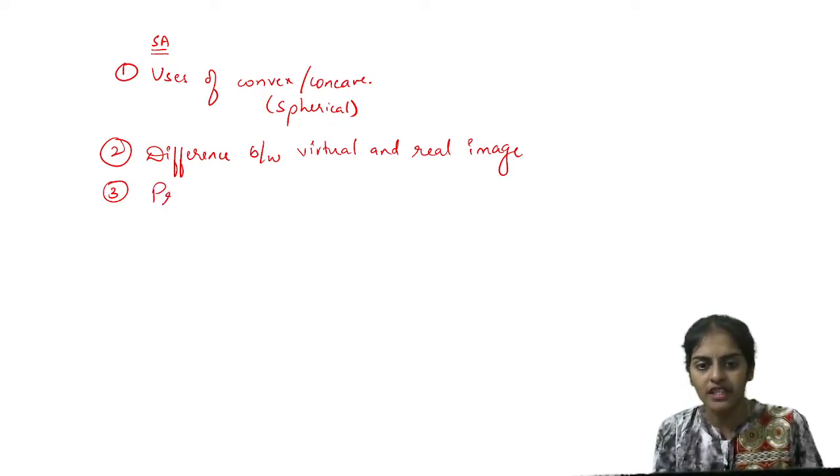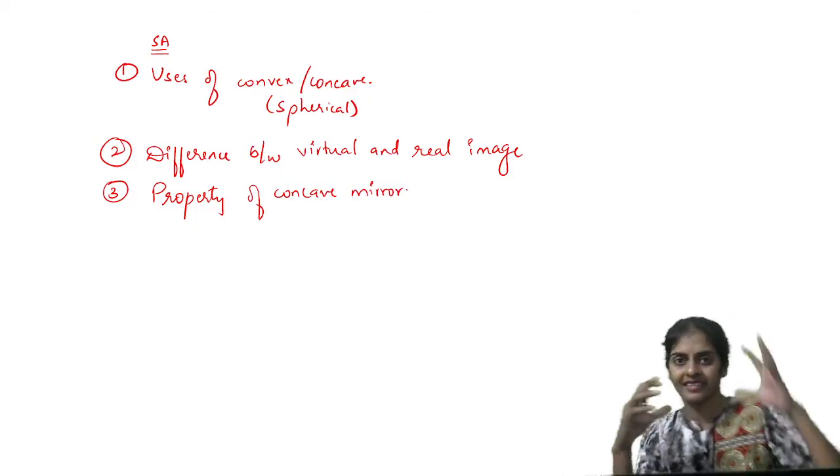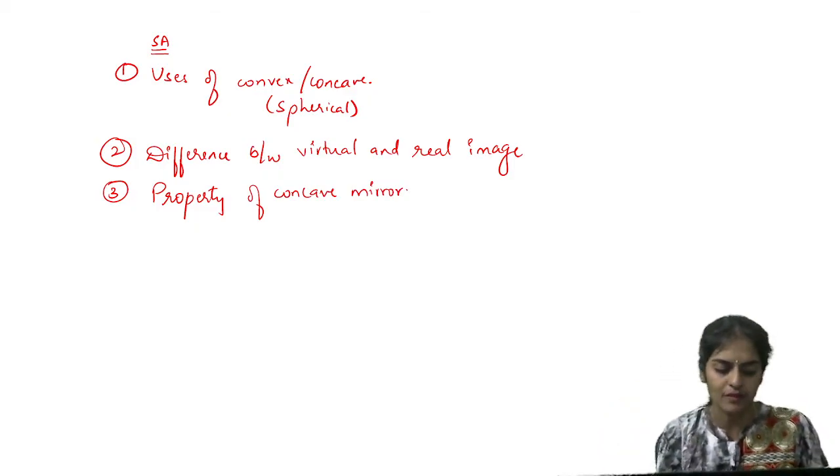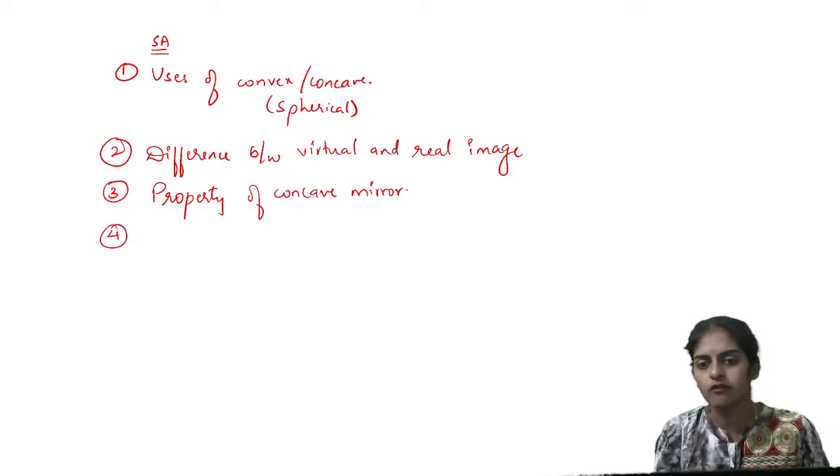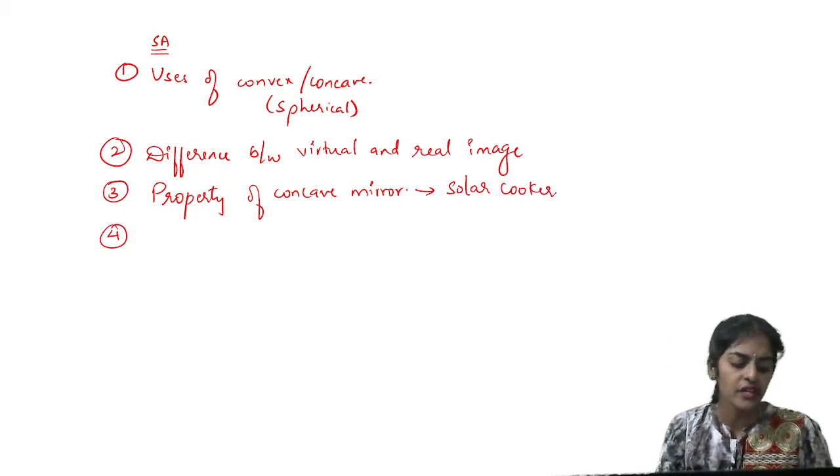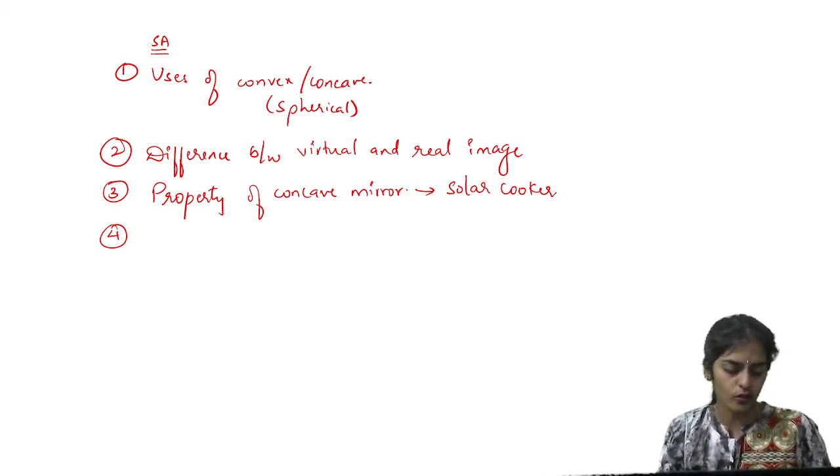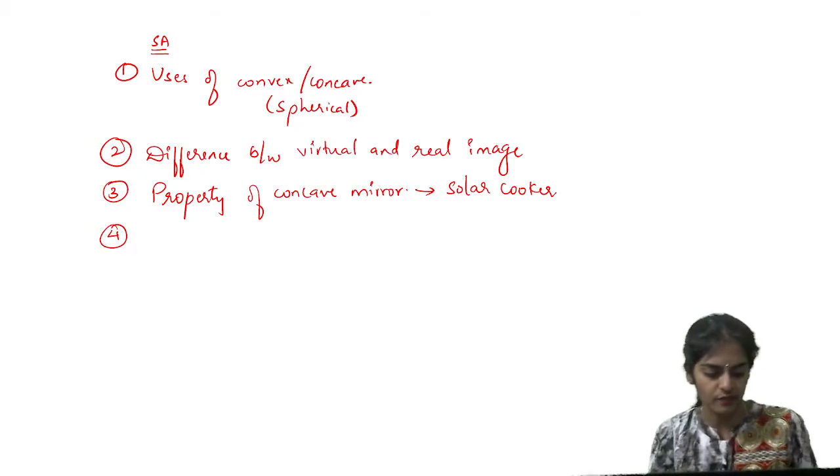Next, what is the property of concave mirror? Concave mirror are converging. They converge the light rays at a point. And this property of concave mirror is used as solar cooker. They just asked you the working of solar cooker. This is last year question. Important.